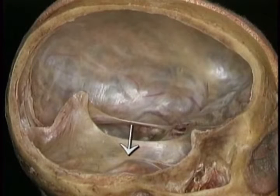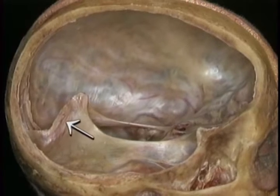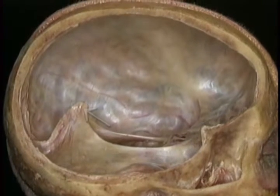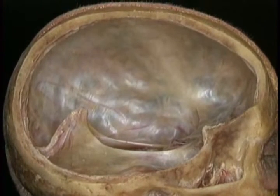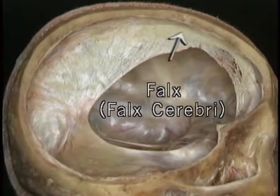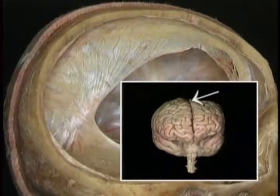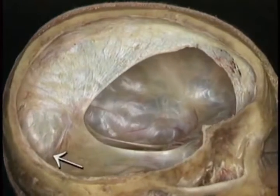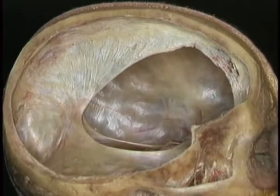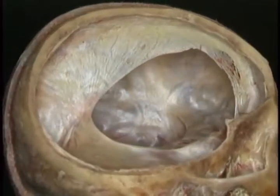The upper surface of the tentorium is continuous with the dura of the floor of the middle cranial fossa. In the midline, the tentorium is attached to the other major partition, the falx. This is the falx — its full name is falx cerebri. The falx forms a midline partition between the two cerebral hemispheres. Here's its attachment to the tentorium. Along its length, it's attached to the occipital, parietal and frontal bones.